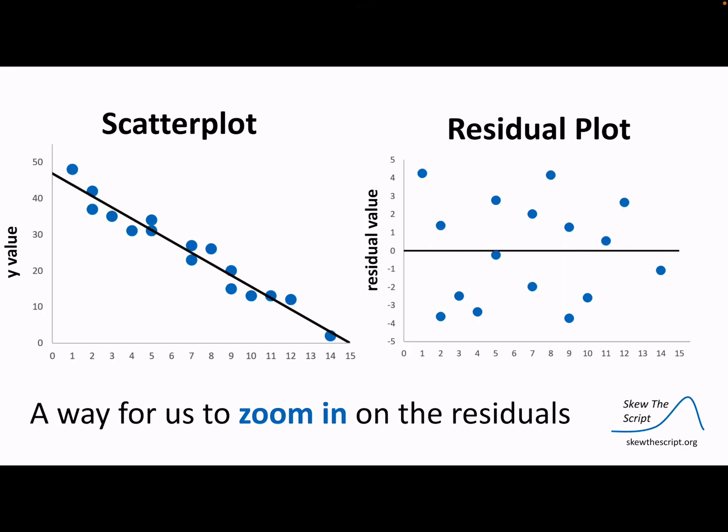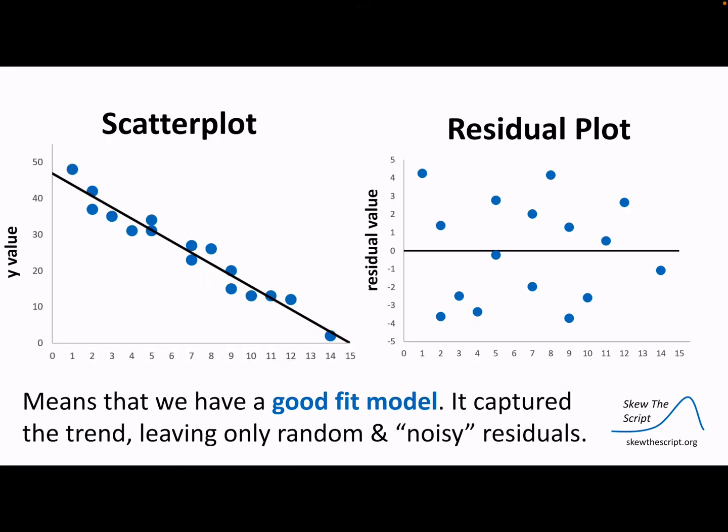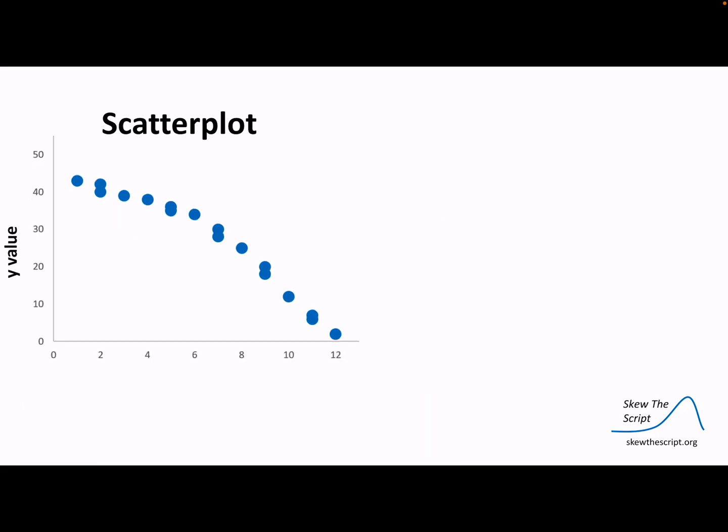I don't teach stats, I'm doing the best I can. The residual plot is centered at zero. When there is no pattern, that's a good thing. When it looks random, that's good. If the dots are randomly scattered on the residual plot, that means that the equation that we came up with was a good fit model. It captured the trend leaving only random and noisy residuals.